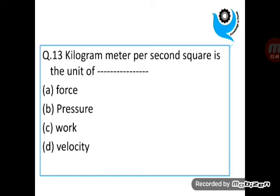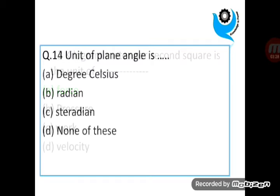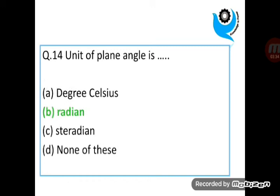Question 13. Kilogram meter per second squared is the unit of pressure. Question 14. Unit of plane angle is radian.